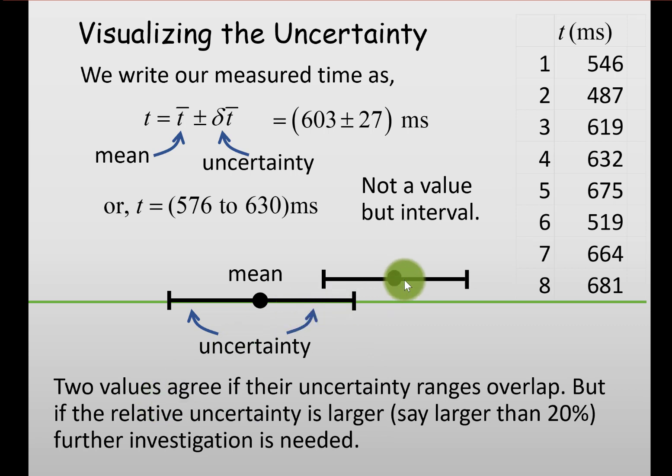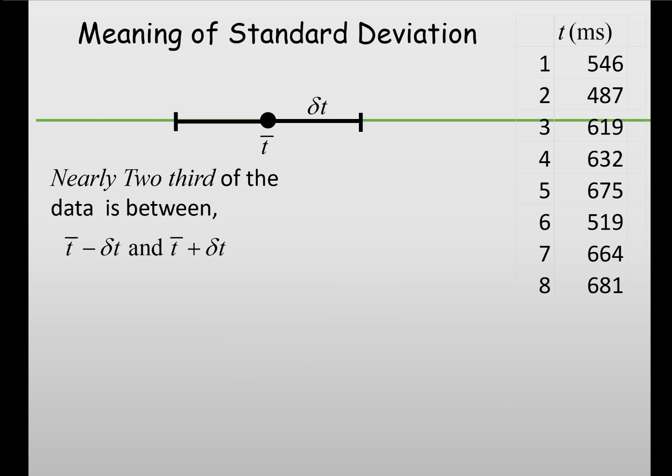That means these two sets of data agree if the uncertainties are overlapping, but we have to be careful about this overlap. For example, if one group has really large uncertainty, the whiskers may overlap no matter what. We have to keep the uncertainty within a certain range, smaller the better. In general, if it is within 10-20 percent and the whiskers are overlapping, then we can say two sets of data agree.